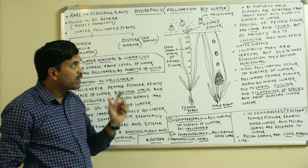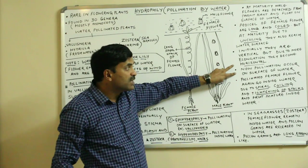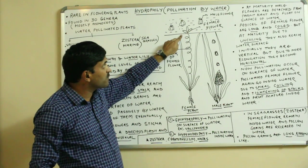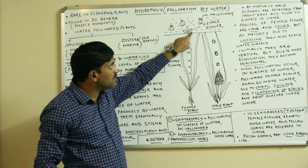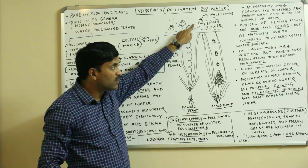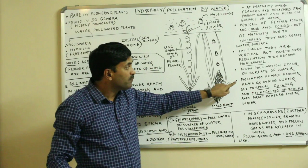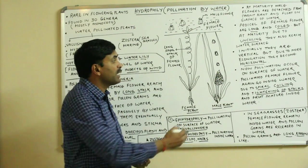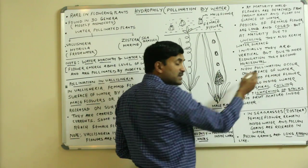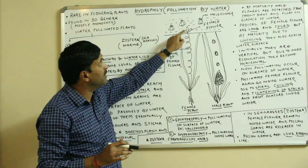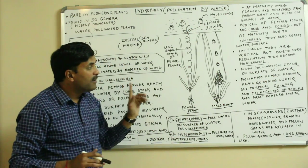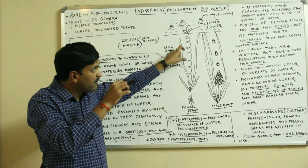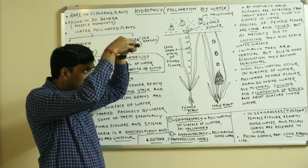Now pollination will occur on the surface of the water, because both the female flower and the male flowers are present there. The act of pollination occurs and the female flower becomes pollinated by the male flower.